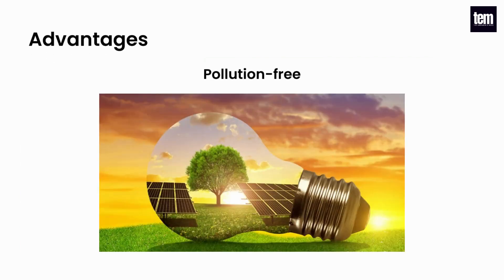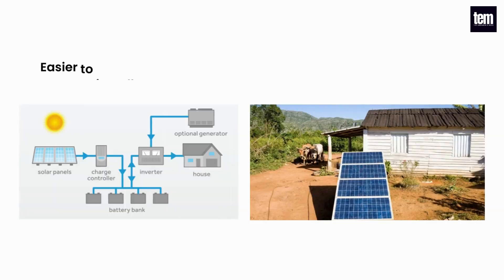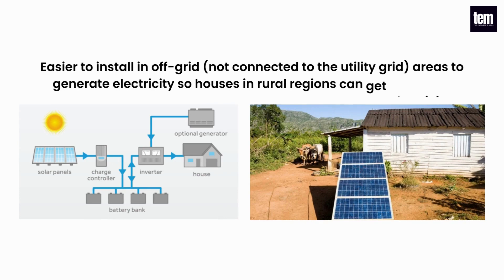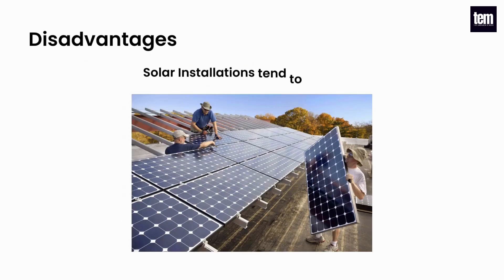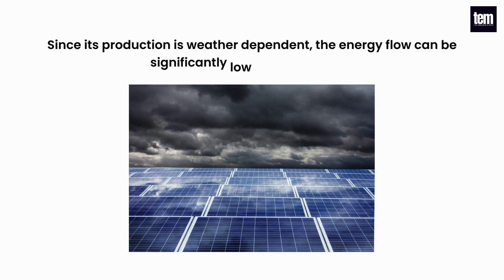Advantages: pollution free, causes no greenhouse gas like carbon dioxide emission. Easier to install in off-grid areas to generate electricity, so houses in rural regions can get electricity. Reduces household energy bills. Disadvantages: solar installations tend to be costly. Since its production is weather-dependent, the energy flow can be significantly low on a cloudy day.